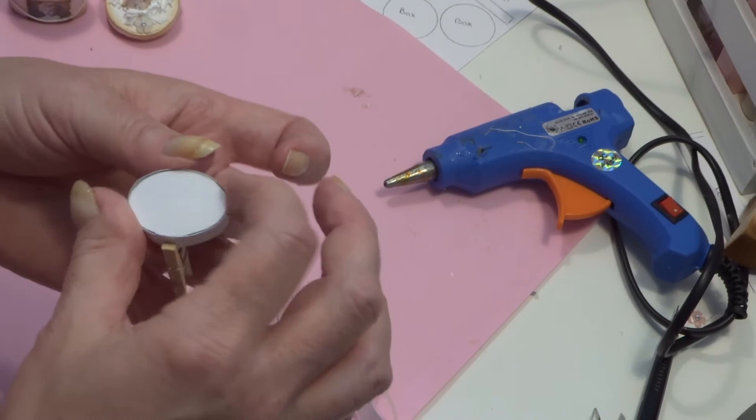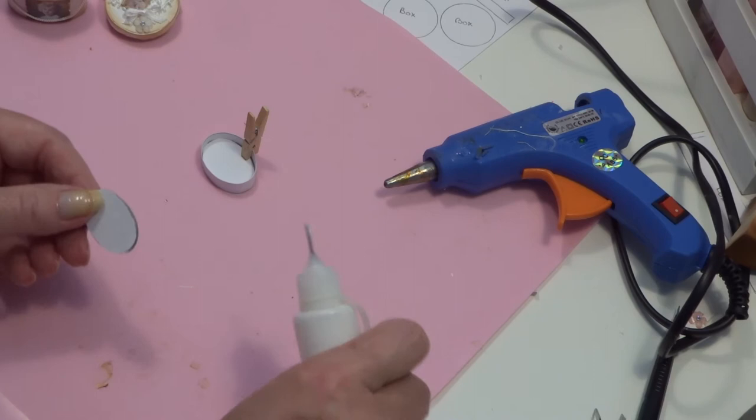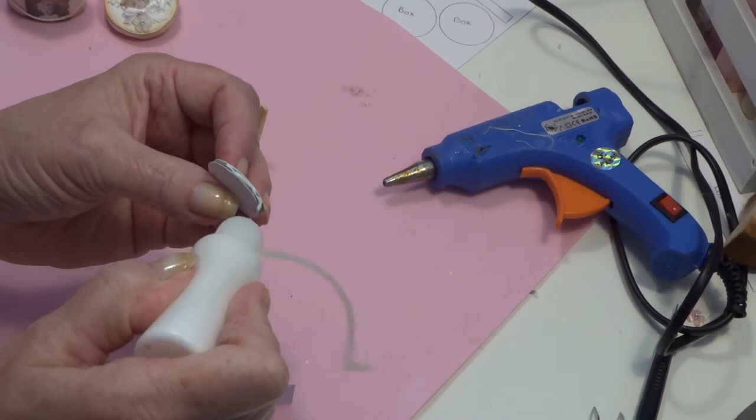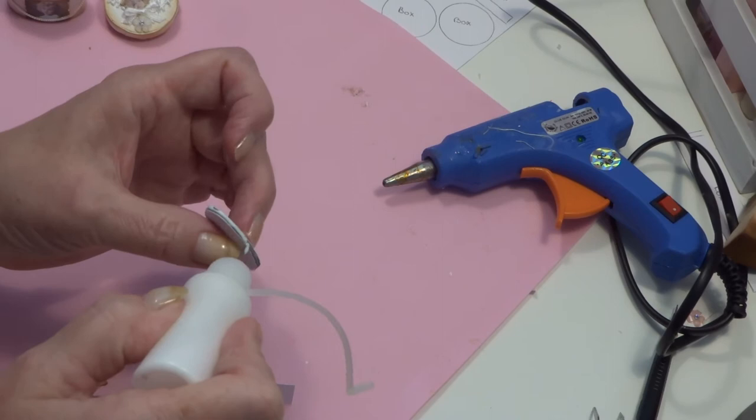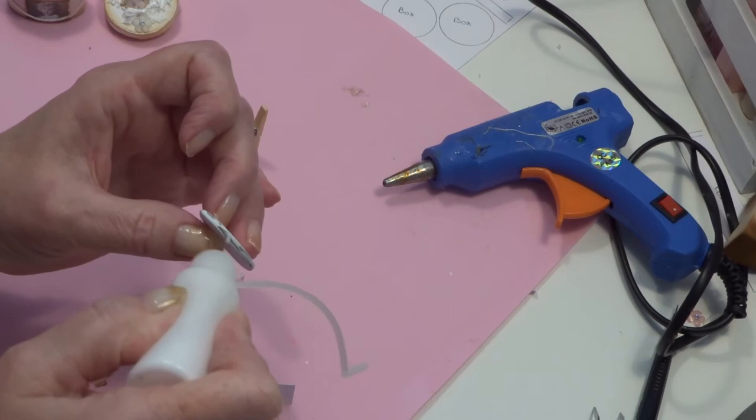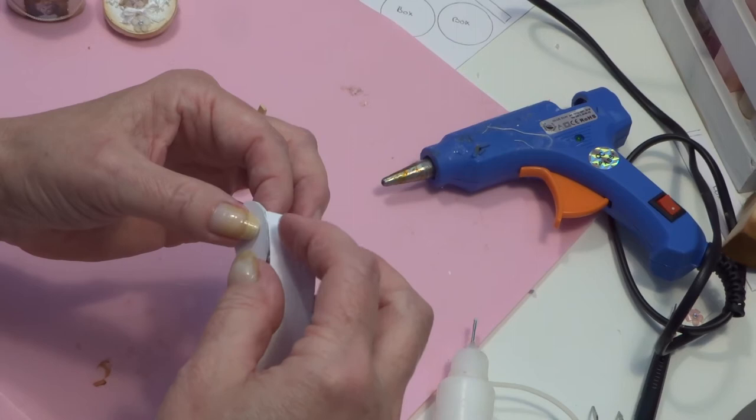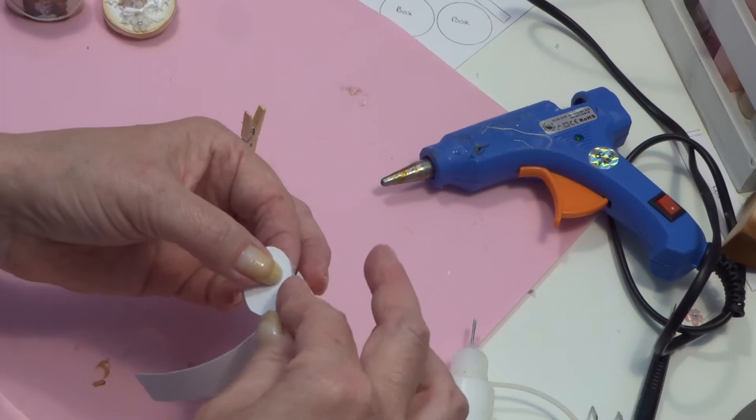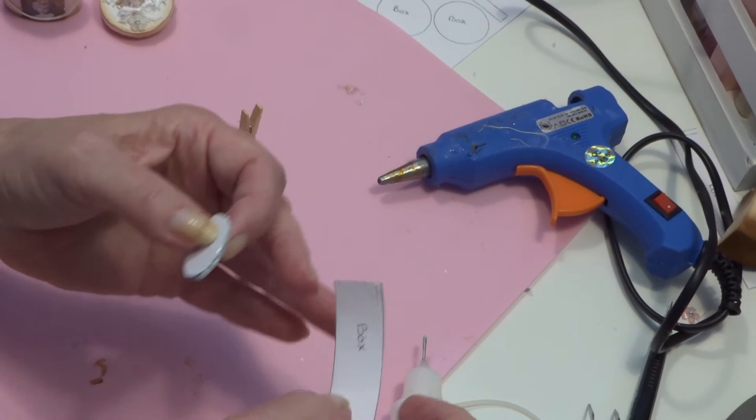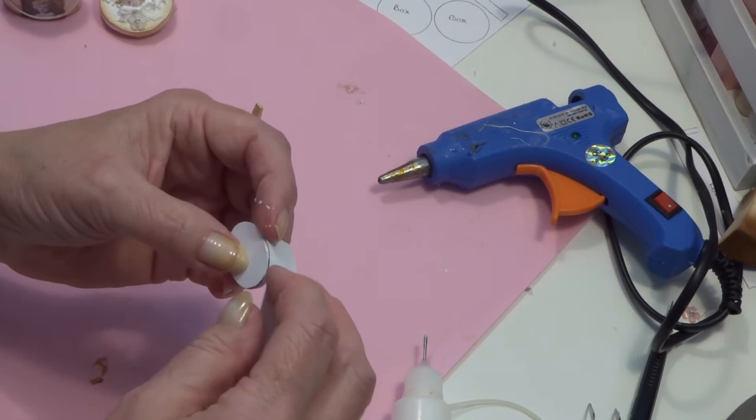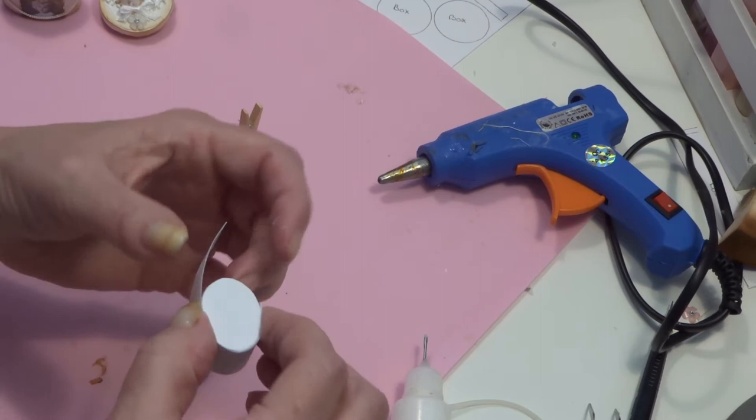And we do the same on the other side. Put some glue on it and start in the middle. Push the lid.